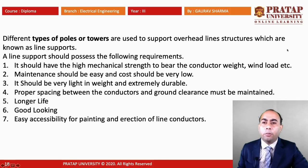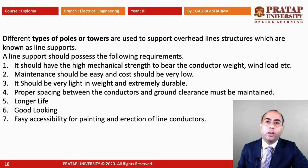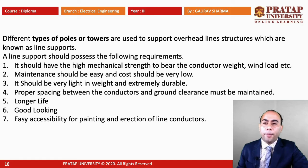Poles and structures for overhead lines have the following requirements: they should have high mechanical strength to bear the conductor weight, wind load, etc. Maintenance should be easy and cost should be very low. They should be light in weight and extremely durable. Proper spacing between conductors and ground clearance must be maintained. The line supports should have a longer life, be good-looking, and allow easy accessibility for painting and directing line conductors.